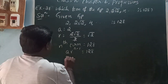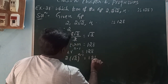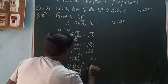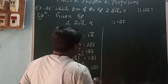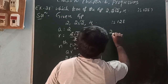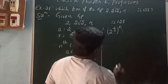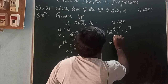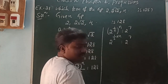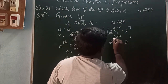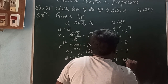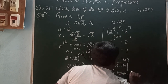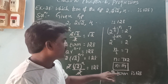Here a is 2, r is √2, so 2·(√2)^(n-1) = 128. Using a^(m-n) = a^m / a^n: 2·(√2)^n / 2 = 128. Writing √2 as 2^(1/2): (2^(1/2))^n = 128 = 2^7. Using (a^m)^n = a^(mn): 2^(n/2) = 2^7. Since bases are equal, powers are equal: n/2 = 7, so n = 14. The 14th term of the GP is 128.